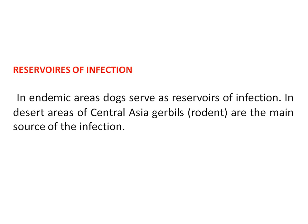The reservoirs of infection: in endemic areas, the dog serves as the reservoir of infection. In desert areas, that is Central Asia, gerbils — rodents such as mice, rats, squirrels, etc. — also serve as the main source of infection. In the endemic region where this disease outbreak occurs, the reservoirs are usually the dogs.